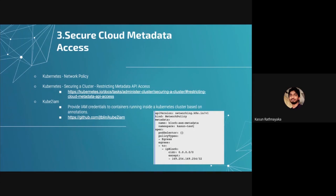With kube2iam, you can control the IAM role from the pod level. For example, if pod one needs to access an S3 bucket or DynamoDB, you can give IAM control only to that particular service through kube2iam. Another solution is a network policy — you can set up a network policy to block access to the metadata endpoint. If you're not familiar with kube2iam, most people use AWS credentials like API keys to authenticate; in that case, you can totally block your metadata from the pod.